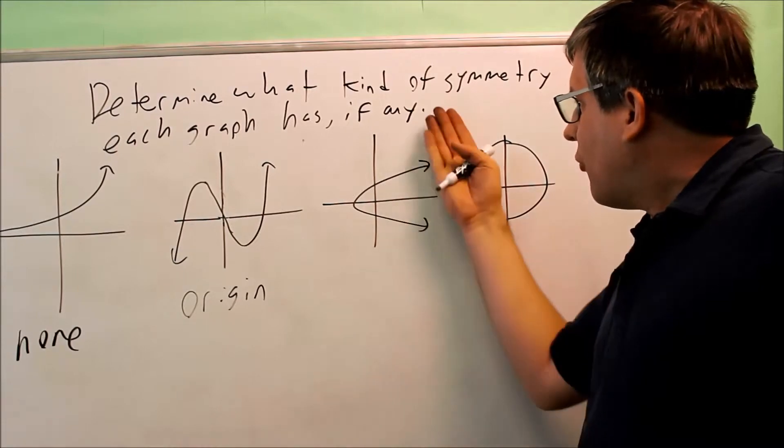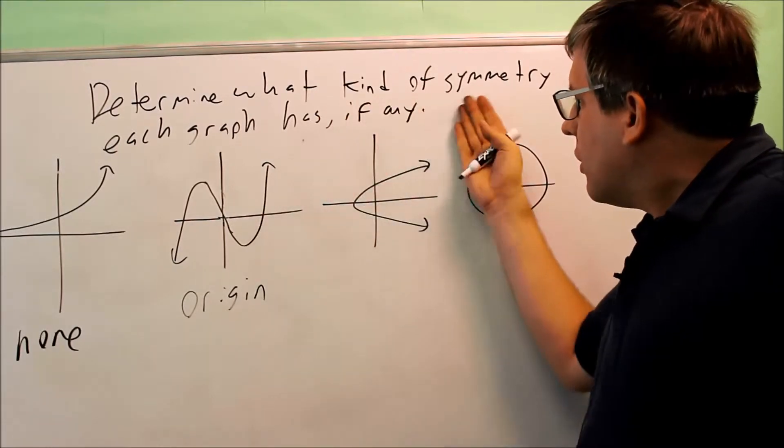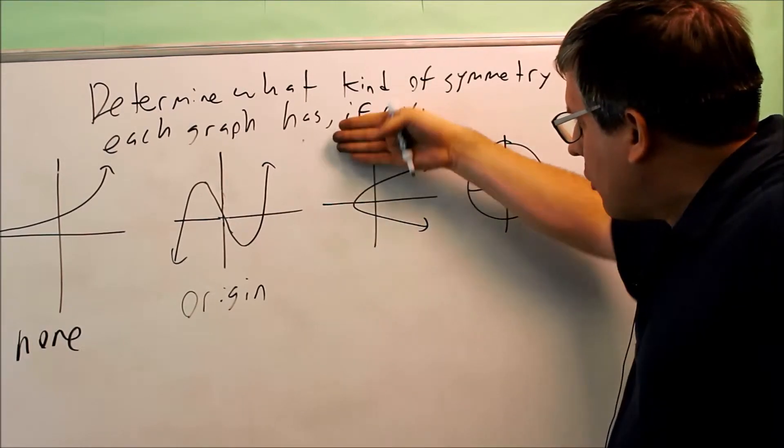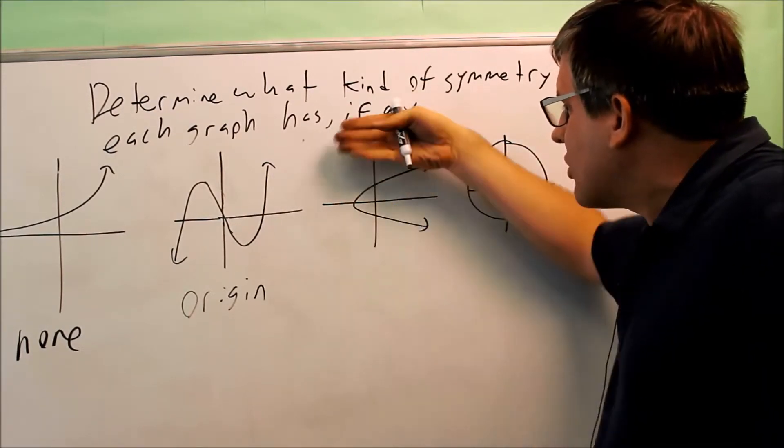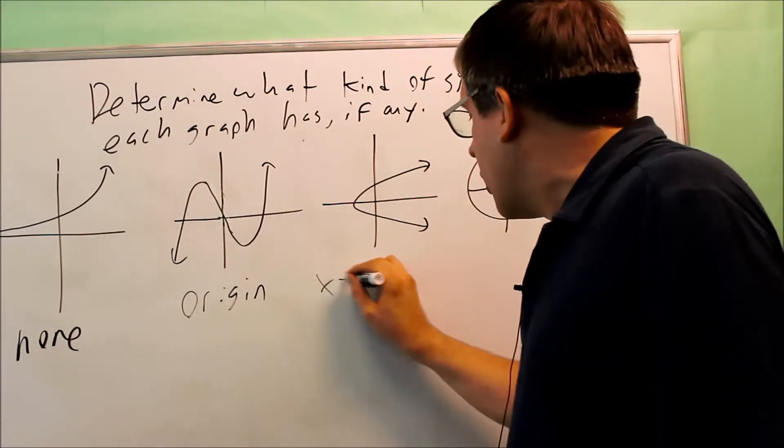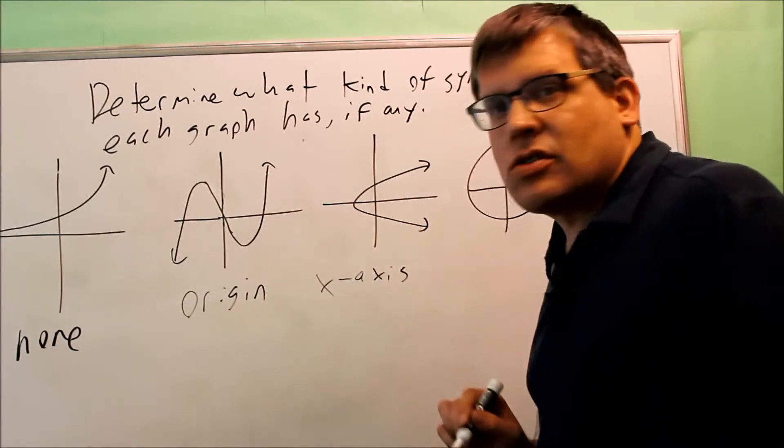The next one, if I fold it over the y-axis, it will not overlap. However, it will overlap if I fold it over this way. So in this case, the x-axis would be a fold line, and so I know for sure that it will have x-axis symmetry.